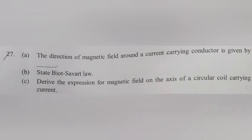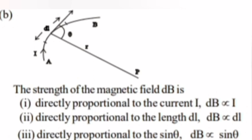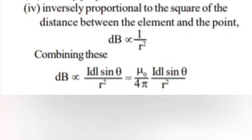Question 27B: State Biot-Savart law. Answer: The strength of the magnetic field dB is directly proportional to the current, directly proportional to the length dL, directly proportional to sin θ, inversely proportional to the square of the distance between the element and the point. dB is inversely proportional to R². Combining these, dB equals μ₀ by 4π times idL sin θ by R².